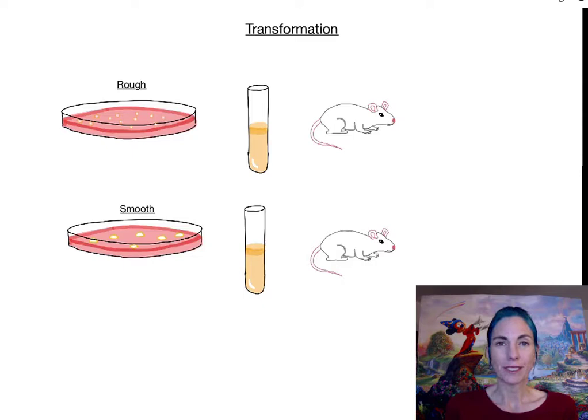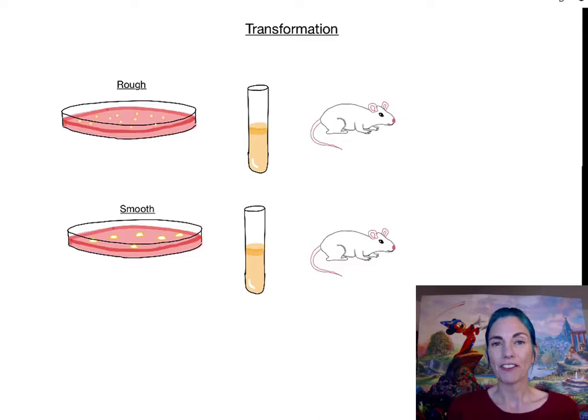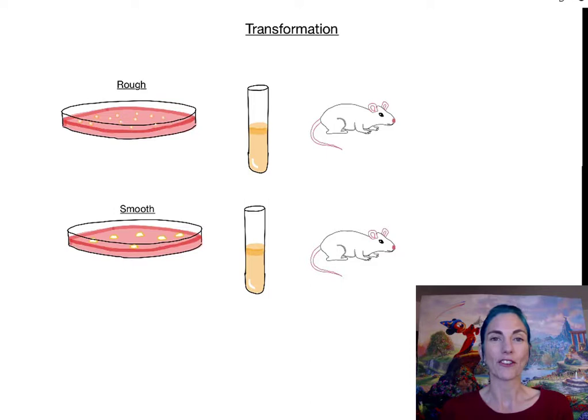Hi, I'm Dr. Leslie Blankenship Williams, and in this lecture we are going to learn about transformation. Transformation is one of three different mechanisms by which bacteria acquire new DNA to become genetic recombinants. In the previous lecture I talked about vertical versus horizontal gene flow, and I listed three different ways that bacteria can achieve horizontal gene flow: transformation, conjugation, and transduction. This lecture is going to look at transformation.